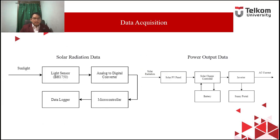Next was data acquisition, which happened before creating the model in order to obtain our dataset. For solar radiation data, we converted the analog signal from our light sensor into a digital signal in order to log our data, whilst we used a Sunny Portal to analyze the power output data.